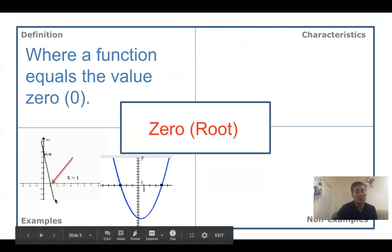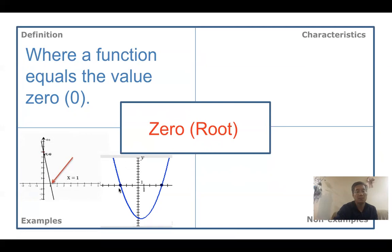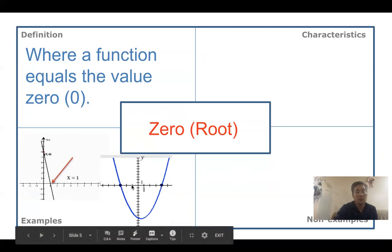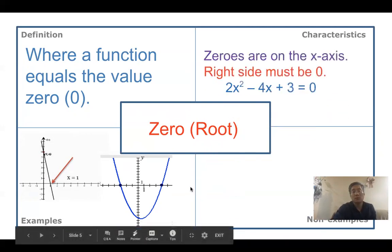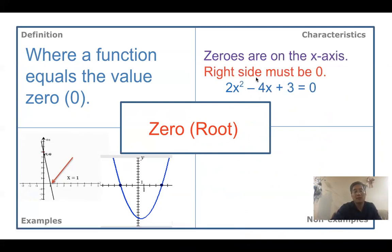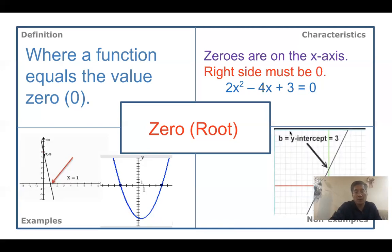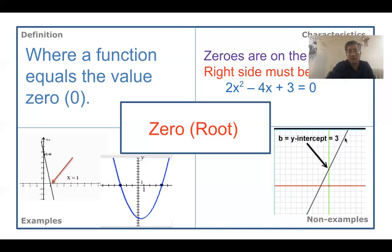Here in this graph, you see only one zero where x equals one. In this quadratic equation, you have two zeros: x is negative three and positive four. But we should be careful — zeros are on the x-axis. Make sure your equation has everything on the same side, and the other side must equal zero. Also, where x equals zero and you look at the y value, we call that not the zero — that is the y-intercept. Please be careful with this.